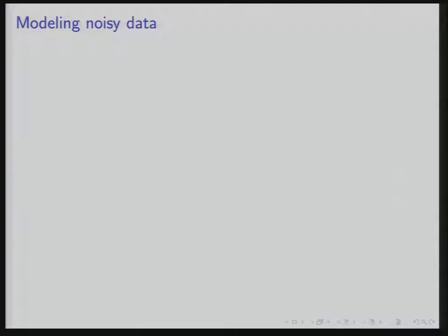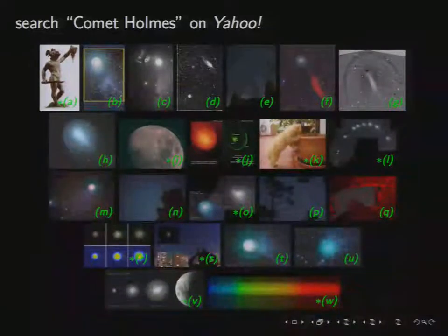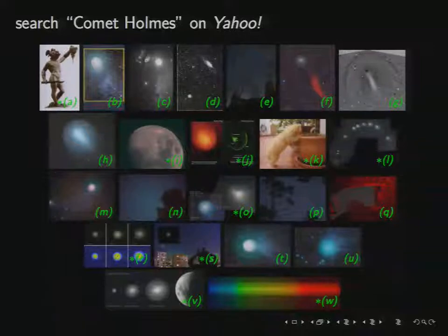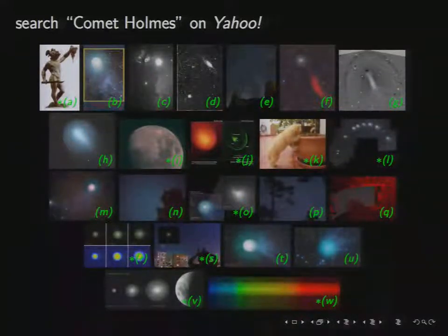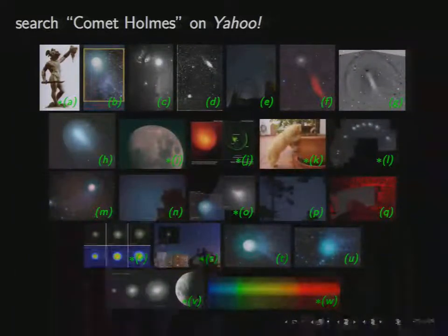My first example is actually a toy example — it was an astronomical research project, but a slightly odd one. I want to show you this toy because it's a very clean example of a whole bunch of issues that come up in astronomy. We started — this is Dustin Lang's work — by doing an image search on Yahoo Images for the phrase 'Comet Holmes' in quotation marks.